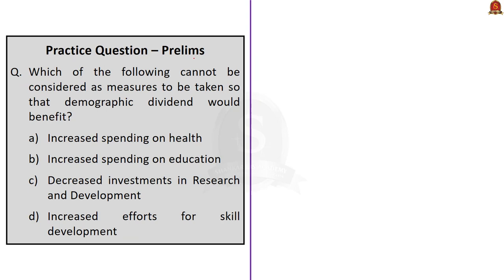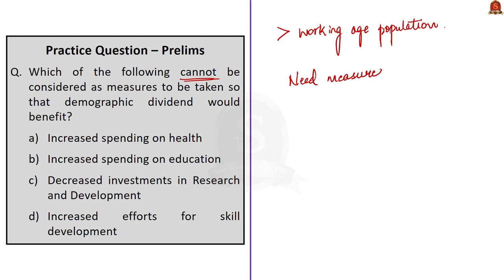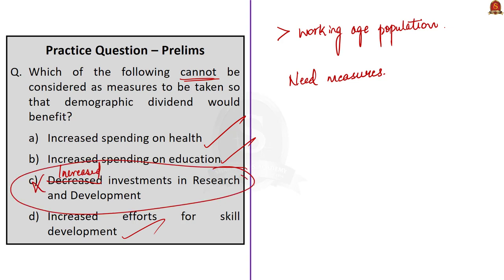The third question asks which of the following cannot be considered a measure to benefit from demographic dividend: Option A: increased spending on health; Option B: increased spending on education; Option C: decreased investments in R&D; Option D: increased efforts for skill development. Measures to benefit from demographic dividend include increased spending on health and education, increased investment in R&D, and skill development. Option C says 'decreased investments' which is incorrect — hence Option C is the answer.